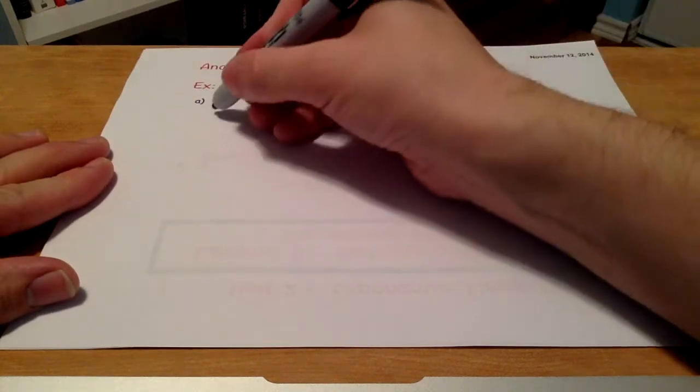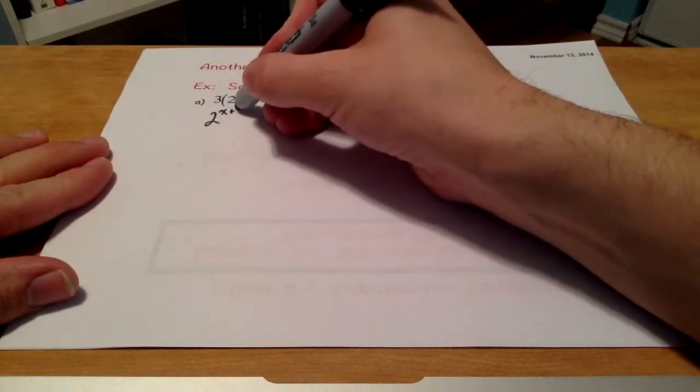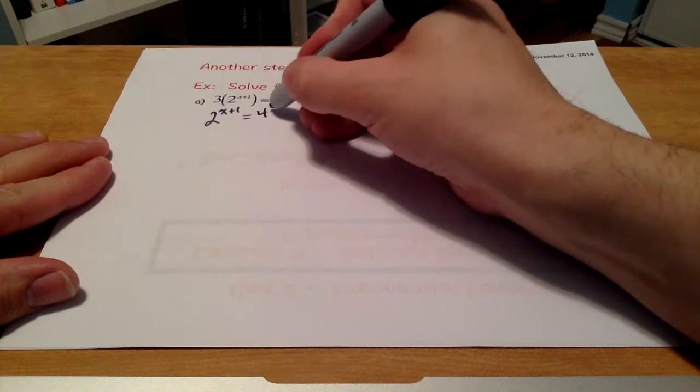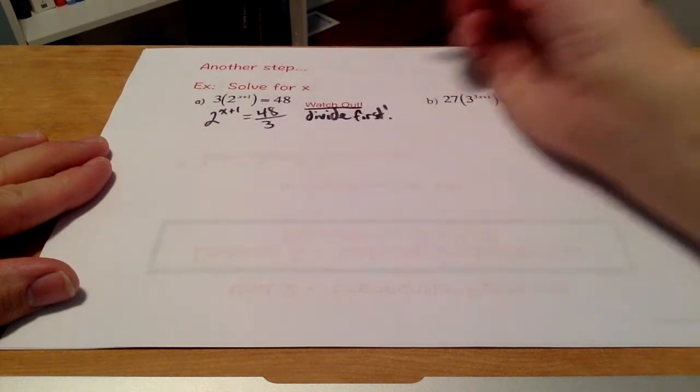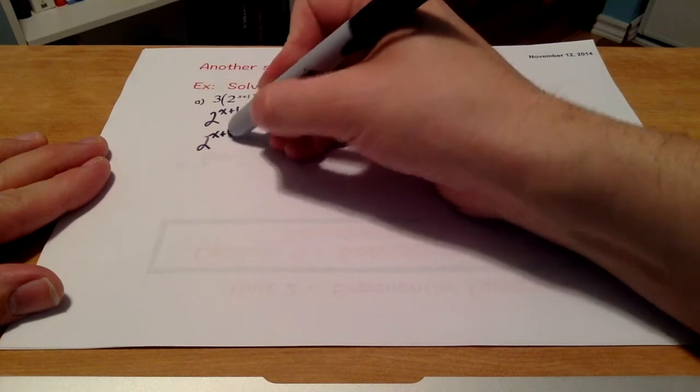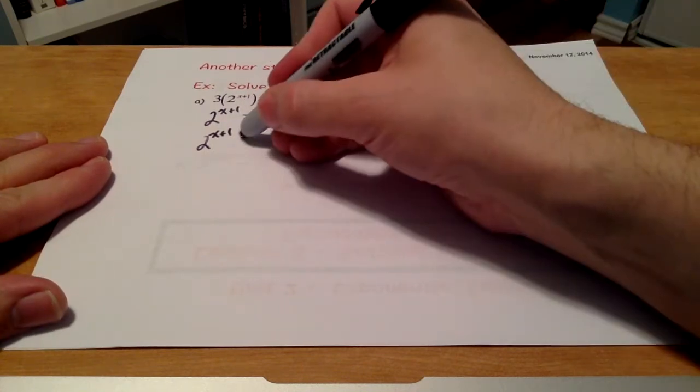First step. So if I divide both sides by 3, I've got rid of that 3 on the left-hand side and I've got 48 over 3 on the right-hand side. I know 48 over 3 to be 16.